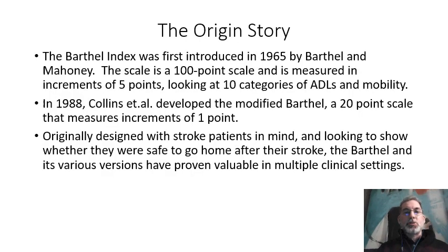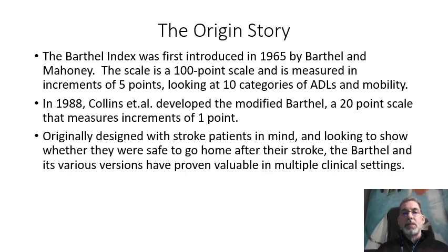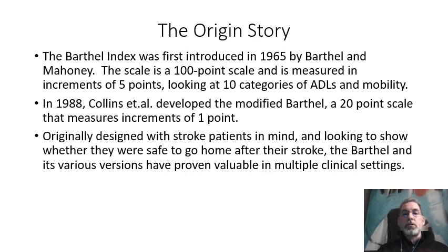Just like superheroes have their origin story, so does the Barthel Index. The Barthel Index came into effect in 1965 by a guy by the name of Barthel and another guy named Mahoney. They could have ended up calling it the Mahoney test, but they went with Barthel. The original test was a 100-point scale measured in increments of five points, and it looked at 10 categories of ADLs and mobility.